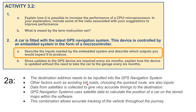The GPS navigation systems use satellite data to calculate the position of the car on the stored maps within the software. The screen of the navigation system displays these different positions — basically where the car is. This may be shown as a graphic of the car's position on the map, tracking through the journey, showing what step we're on, where we need to get to.